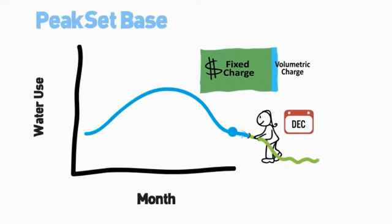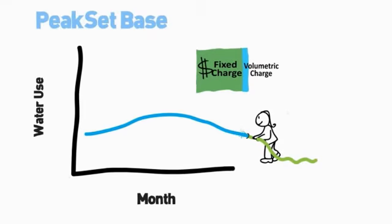A utility using the Peak Set Base model would be able to collect more revenue from a customer's fixed charge, making the annual budgeting process much more predictable, but would still be sending a price signal to customers to use less water. In fact, under the Peak Set Base model, customers are incentivized to levelize their water use, which for some utilities can drive significant savings in the long term.